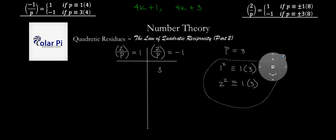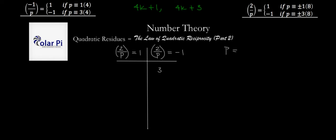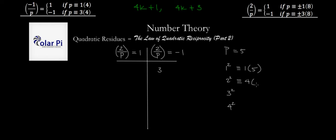The next prime is 5. Testing all squares mod 5: 1²≡1, 2²≡4, 3²=9≡4, 4²=16≡1 mod 5. The only quadratic residues mod 5 are 1 and 4, so 2 is not among them. Therefore (2/5) = -1, and 5 goes in the non-residue column. Next we try P=7. We get 3²=9≡2 mod 7, so 2 is a quadratic residue mod 7. So 7 goes in the residue column.